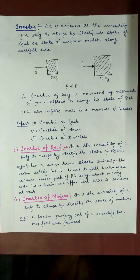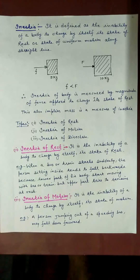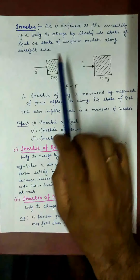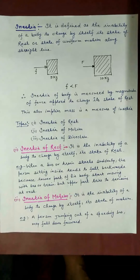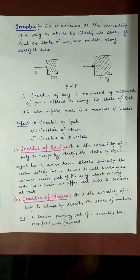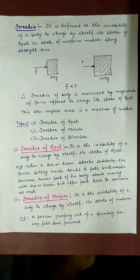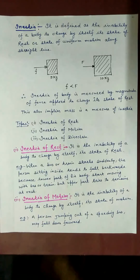कोई भी body अपने आप अपनी state change नहीं कर सकती — state of rest या uniform motion। जैसे किसी table पे एक book पड़ी हुई है, अगर हम एक साल तक उसे न छुएं तो उसकी state of rest change नहीं होगी। उसी प्रकार अगर कोई cycle सीधा चल रहा है तो सीधा ही चलता रहेगा जब तक कोई external force apply न हो।